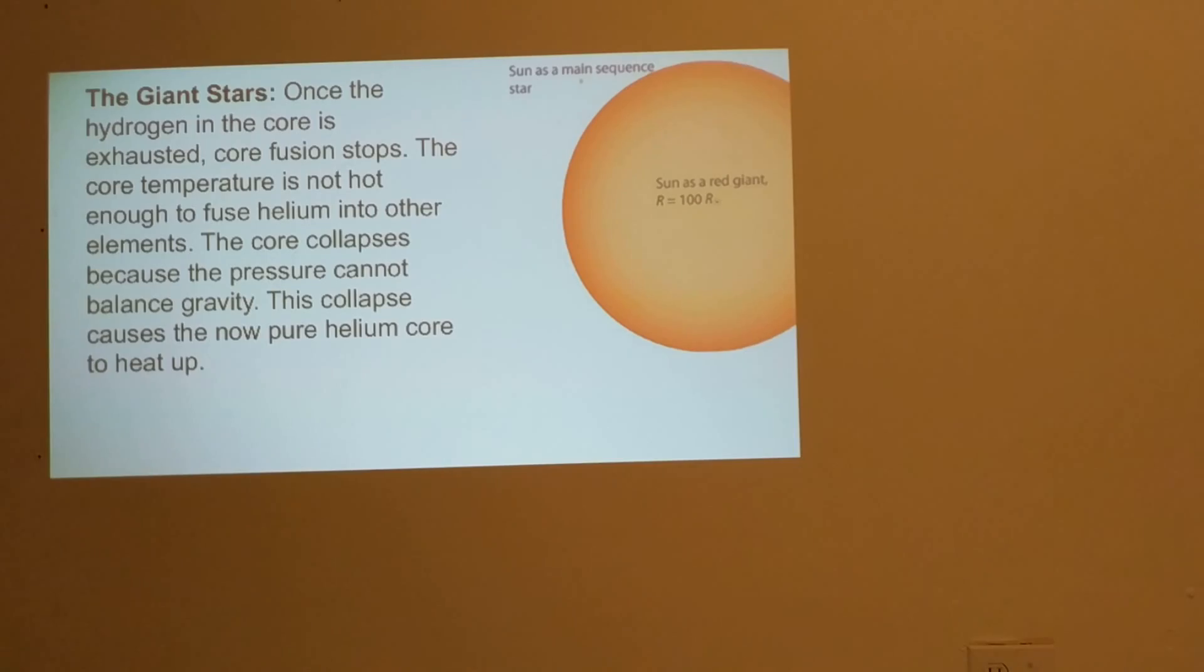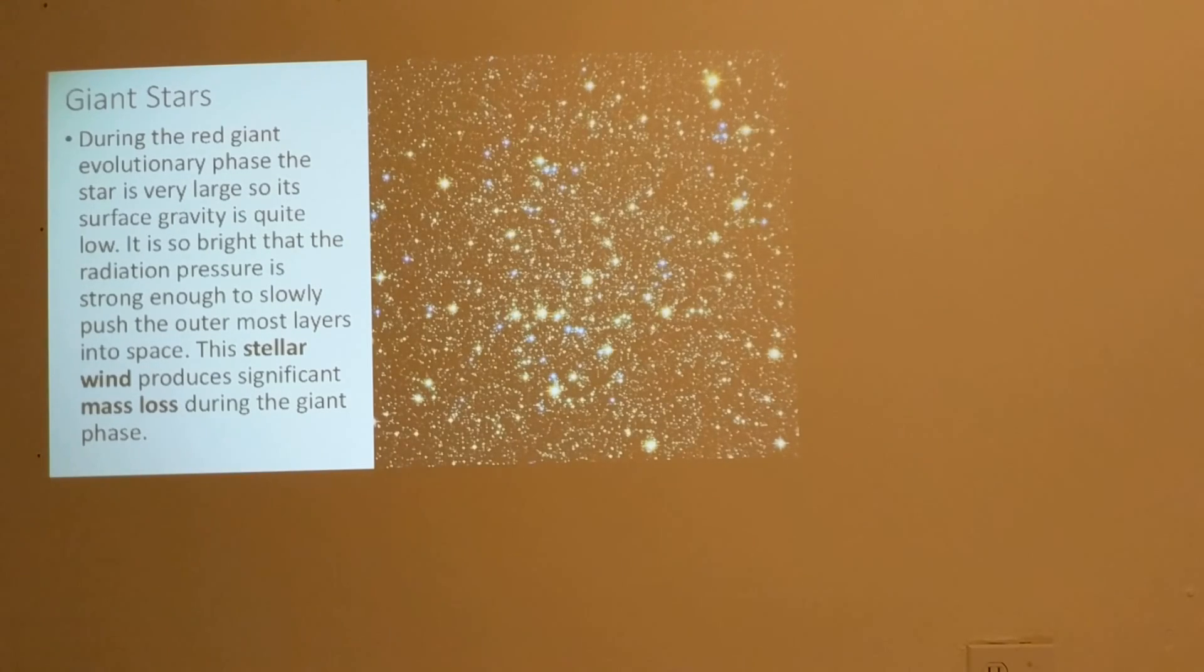During the red giant evolutionary phase, the star is very large so its surface gravity is quite low, and it is so bright that the radiation pressure, the light pressure pushing out at the surface, is strong enough to slowly push the outermost layers of the star into space. This stellar wind, similar to a very strong solar wind, produces a significant mass loss during the giant phase.